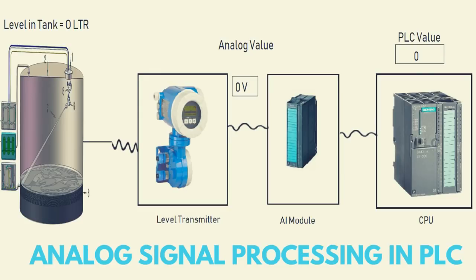Welcome to another session. Today we are going to talk about how we take analog signals in a PLC, how we process them, and what phases the analog signal goes through coming into the PLC. By analog signal we mean level, temperature, pressure, current, voltages — these kinds of signals are everywhere in oil and gas, petrochemical, power plant, fertilizer, and cement industries.